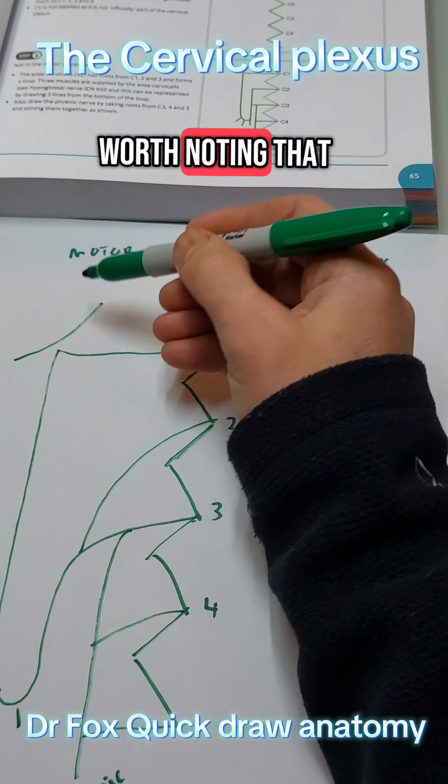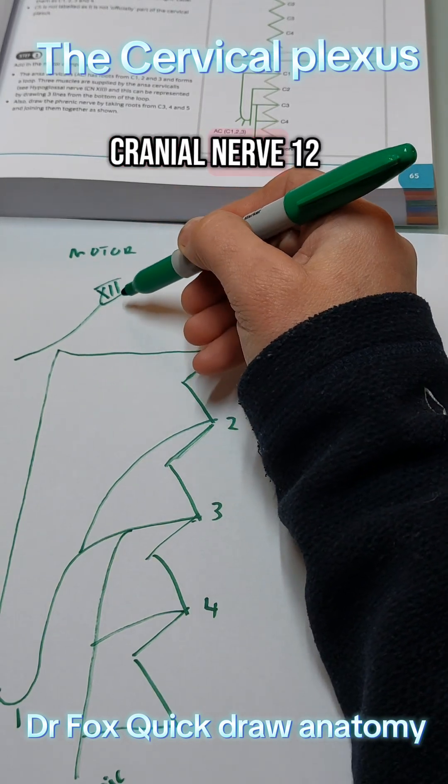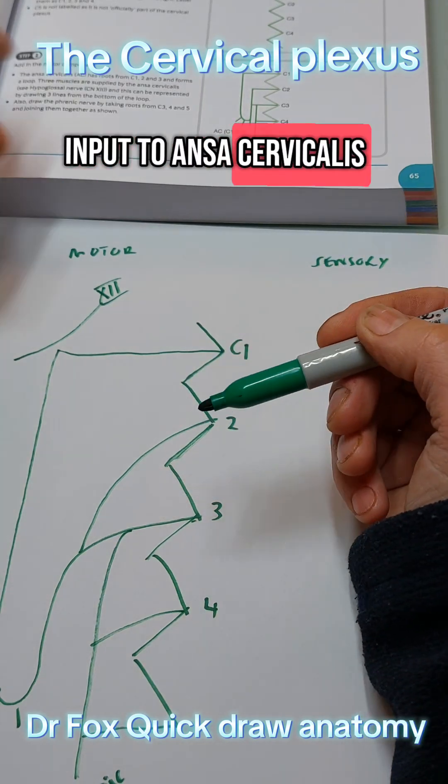And it's also worth noting that the hypoglossal nerve, cranial nerve 12, also has some input to Ansa cervicalis.